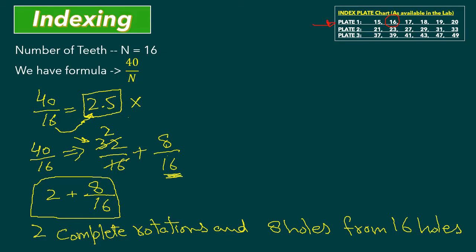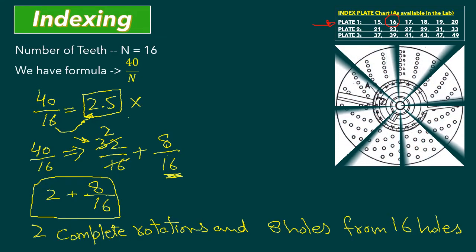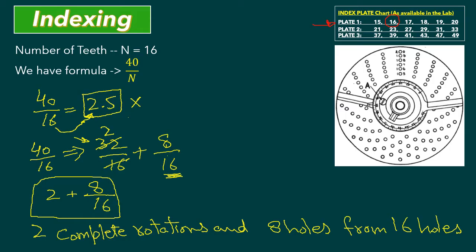How do we understand this answer? The first value before the plus sign means complete rotations, and the fraction means we take 8 holes from 16 holes. Looking at the plate, the 16-hole circle is shown here. Our crank starts at position zero. We make one full round, then a second full round — that is two complete rotations of the crank.